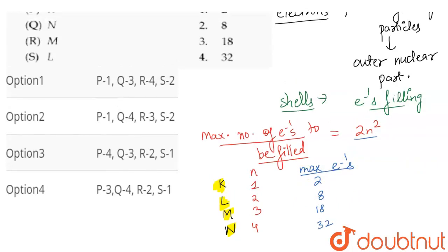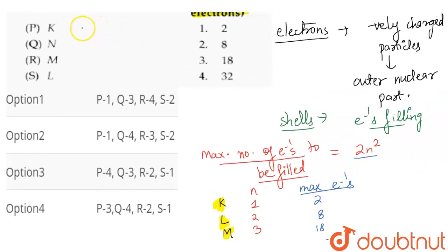So if we match our options, K will be 1st meaning 2 electrons, N will be 32, M will be 18, and L will be 2nd meaning 8. So if we talk about options here, P will be 1, Q will be 4, R will be 3, and S will be 2. This is your correct answer, so option 2 is correct. Thank you.